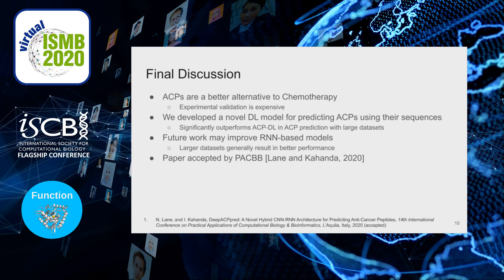In summary, anticancer peptides are a promising alternative to chemotherapy. In this project, we developed a novel deep learning model for predicting ACPs using their amino acid sequences. We found that our model significantly outperforms the previous RNN model, ACPDL, when using large datasets. We hope that future work might improve these RNN-based models, and in particular that larger datasets may result in better performance in the future. Finally, the paper describing this project has been accepted by the 14th International Conference on Practical Applications of Computational Biology and Bioinformatics, which will be held in L'Aquila, Italy in October of this year. Thank you.